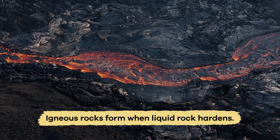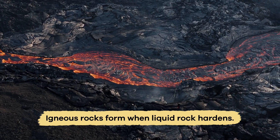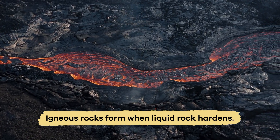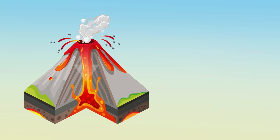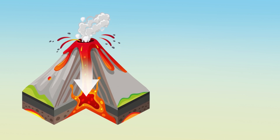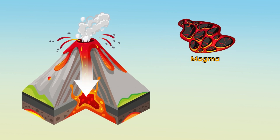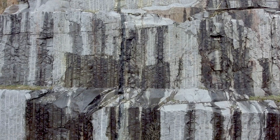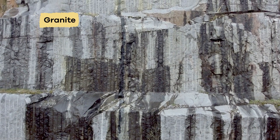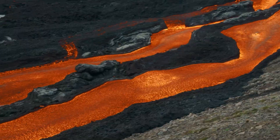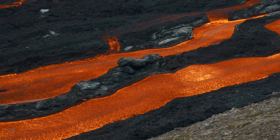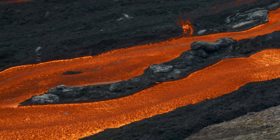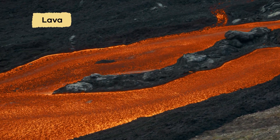Igneous rocks form when liquid rock hardens. When the liquid rock is below ground, it is called magma. And when it hardens, it forms intrusive igneous rocks, like granite. When the liquid rock is above ground, it is called lava.